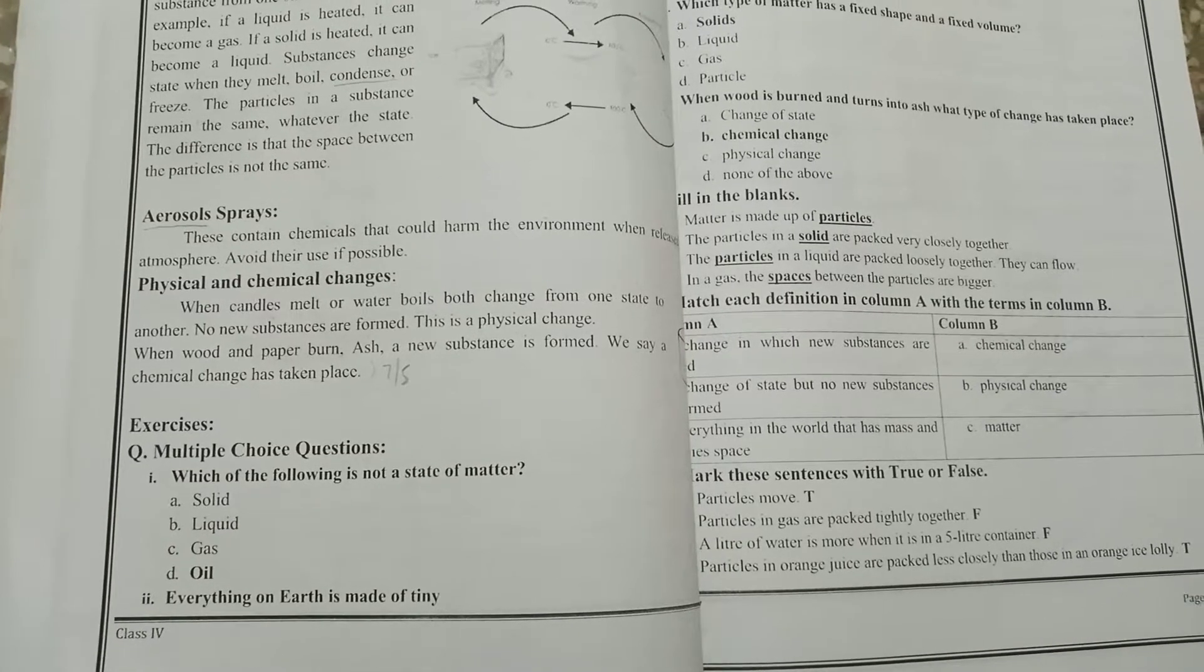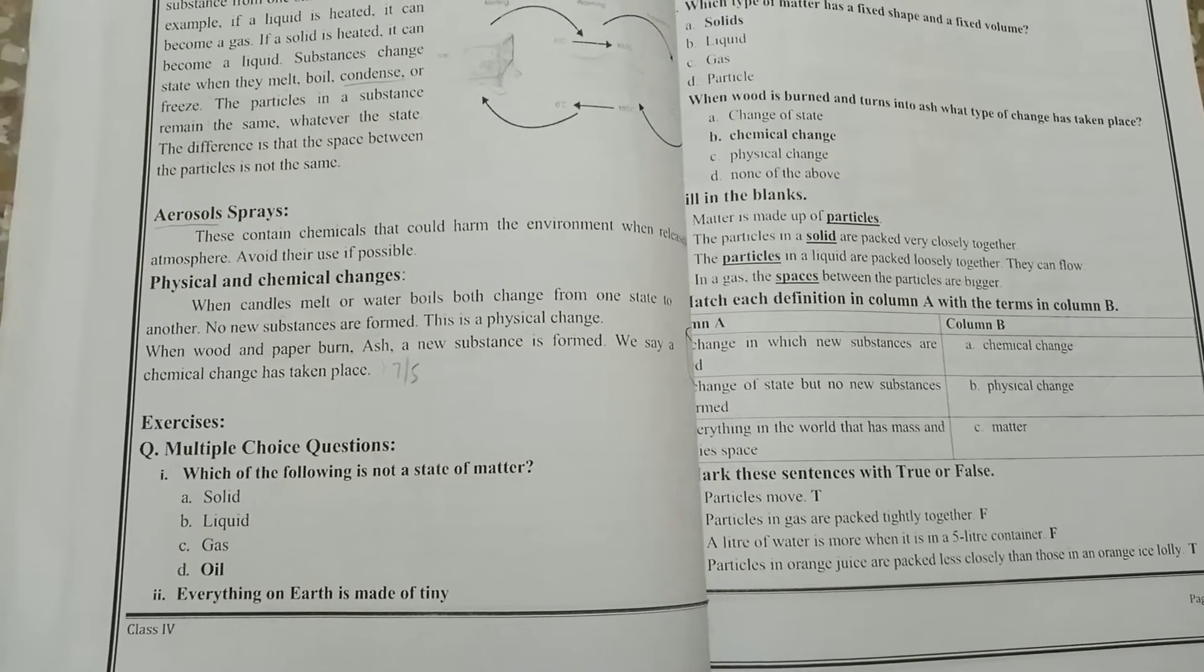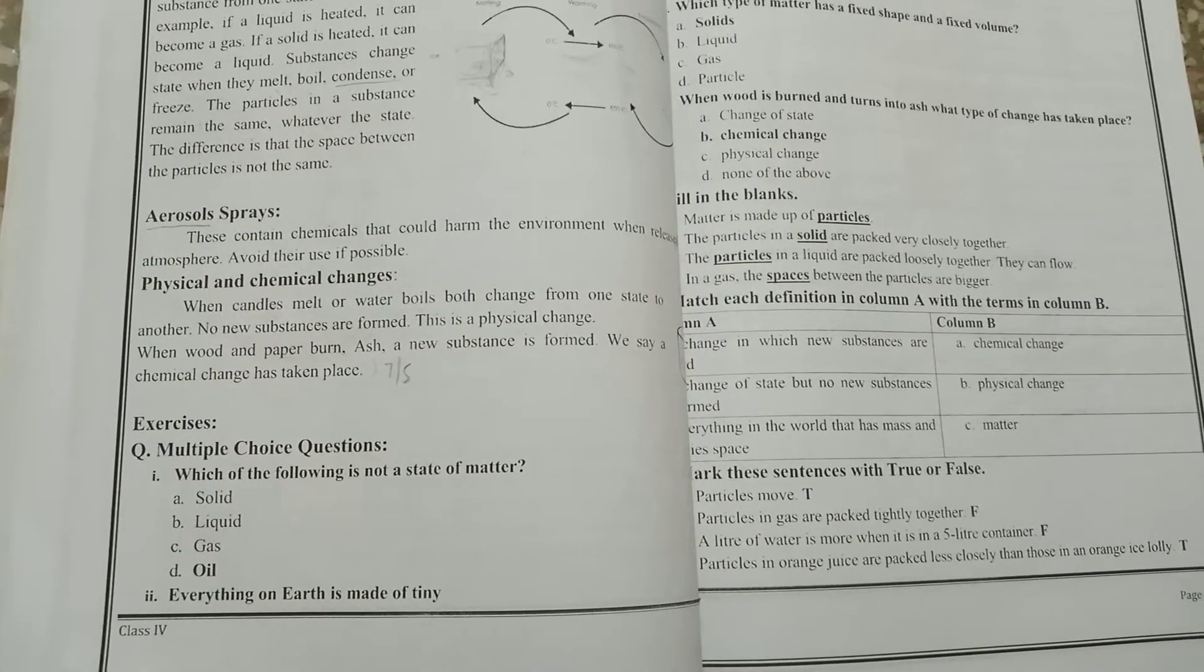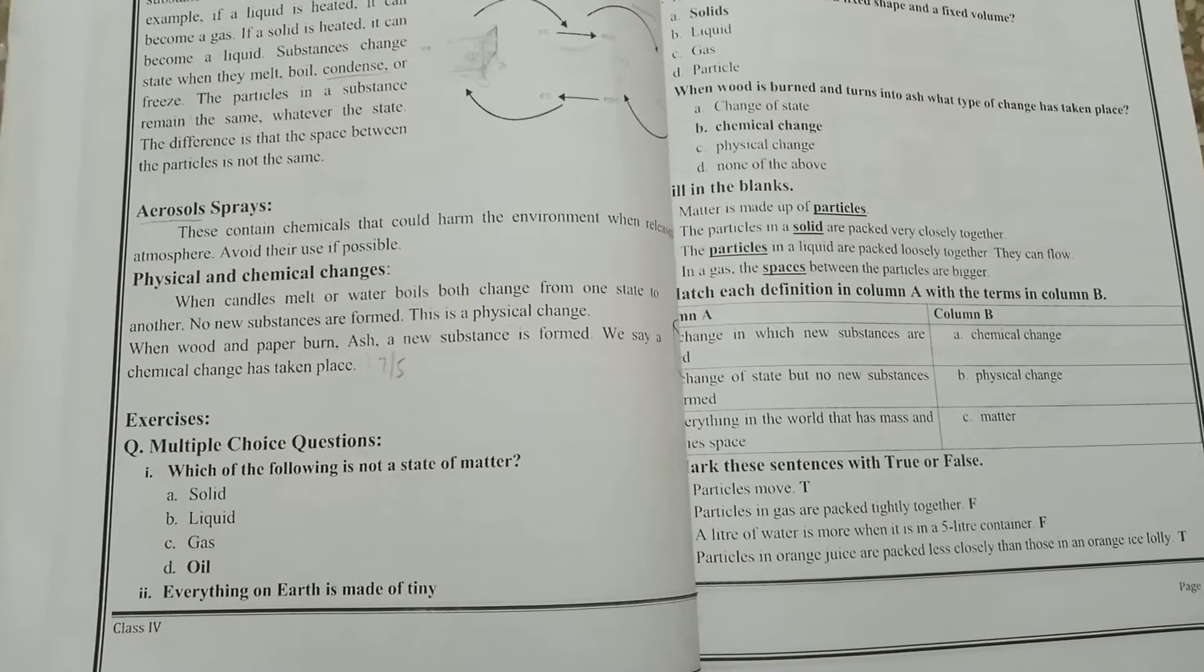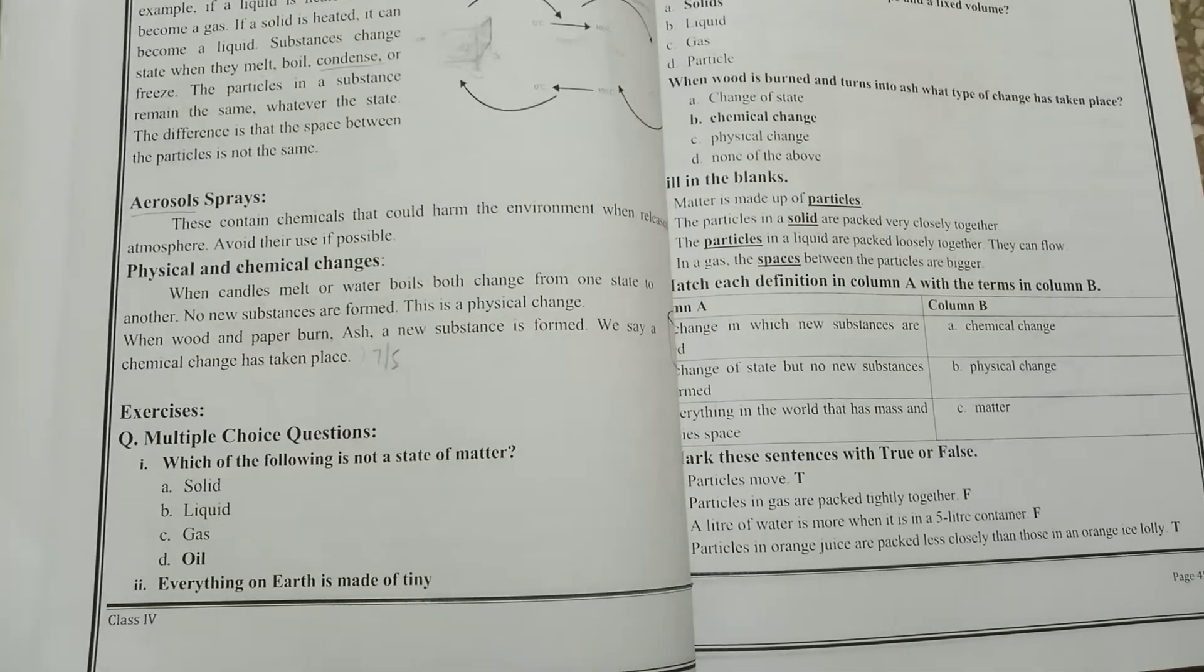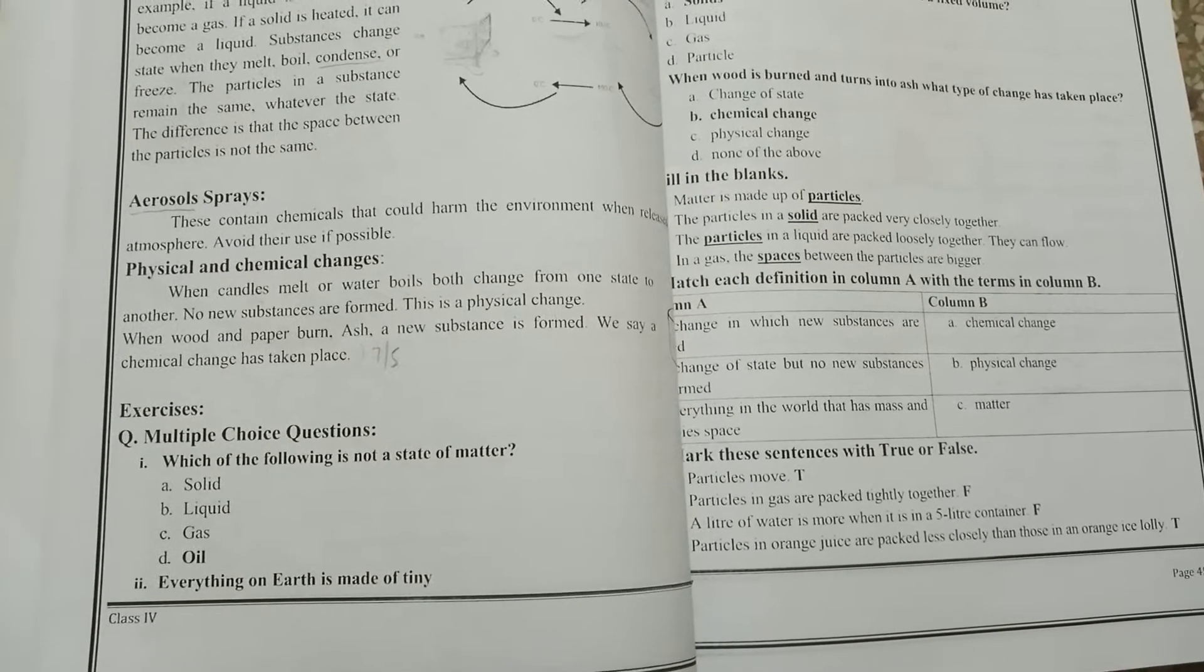First of all, match column A. A change in which new substances are formed, so the answer is chemical change. Chemical change is a change in which new substance comes to us. Then, change of substance in which no new substance formed is physical change. In physical change, no new substance is made.